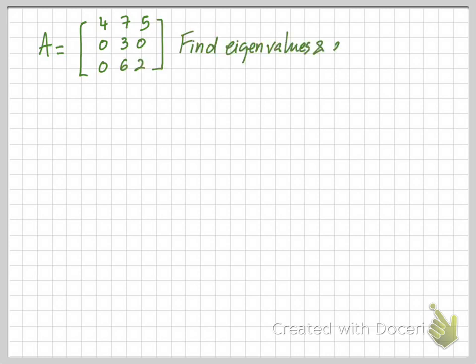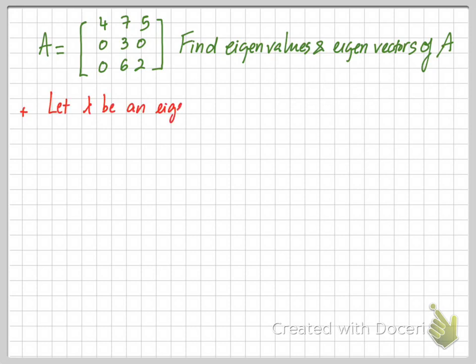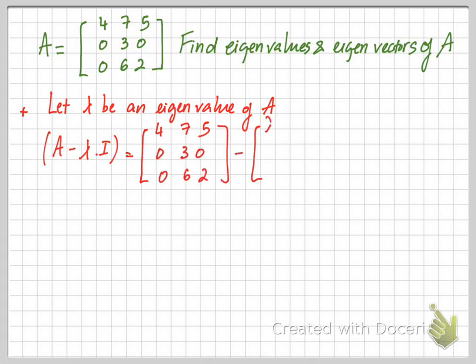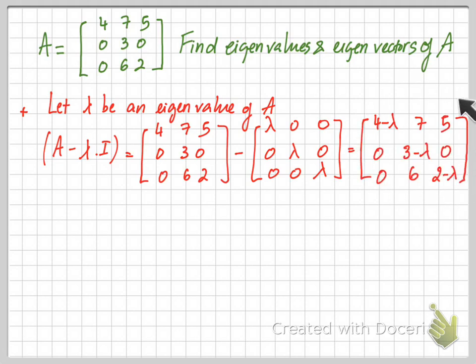Let's look at an example. We have a 3 by 3 matrix A, and we want to find its eigenvalues and eigenvectors. First, let lambda be an eigenvalue of A. We form the matrix A minus lambda·I by subtracting lambda·I from A. The diagonal entries become four minus lambda, three minus lambda, and two minus lambda, while all other entries stay the same.